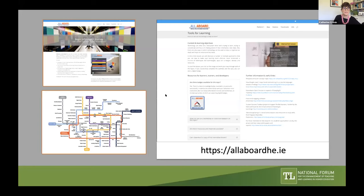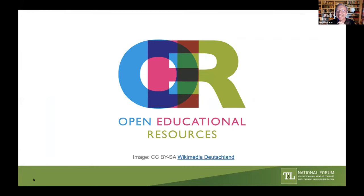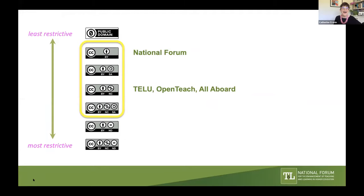To wrap up, thinking about licensing — going from least restrictive to most restrictive. As you can see from what everyone mentioned, the National Forum uses a CC BY license for what we share. As a national, publicly funded body, that's our commitment. The three projects shared this morning used a CC BY NC license. Other bodies use different licenses. A lot of public cultural heritage — the Rijksmuseum, Paris Museum, Smithsonian, Hunt Museum in Limerick — the Wellcome Trust mostly use public domain licenses.